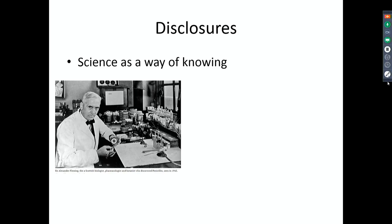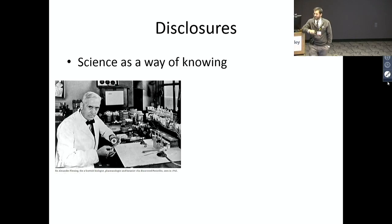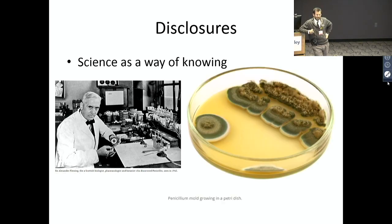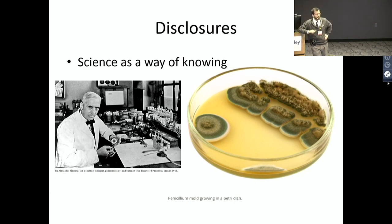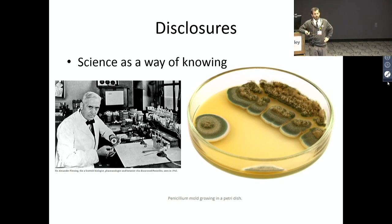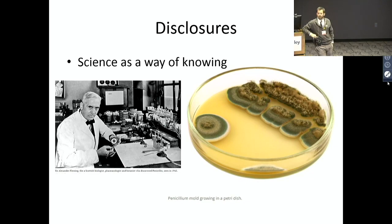Fleming is credited with discovering penicillin. Basically what happened is he was really bad at doing dishes. He went on vacation and left a whole bunch of dirty dishes in his lab. When he came back, he found a dish full of mold. What he noticed was that none of the bacteria that were supposed to have grown on that plate would grow anywhere near that mold. So that mold — called penicillin — was creating some substance that was keeping bacteria from growing near it. He discovered it and named it penicillin, but he didn't know if it was an enzyme, a chemical, or a protein. That was in 1929, and that's kind of where it stopped.